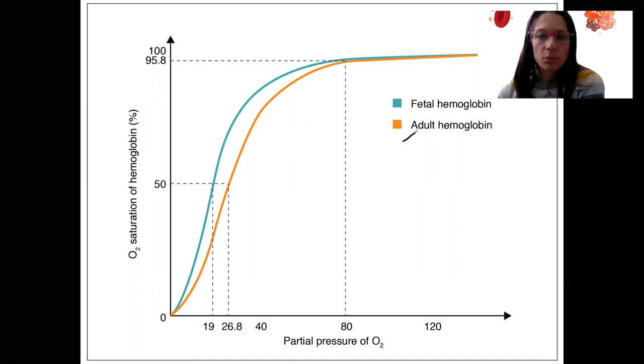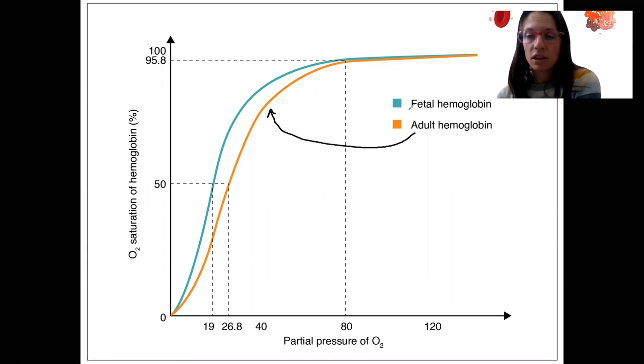Here's our adult hemoglobin. This is our normal curve, S-shaped. What is up with this fetal hemoglobin? So in a fetus, the hemoglobin is made.